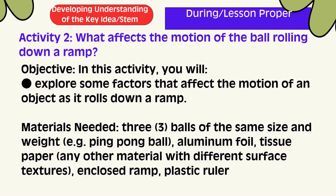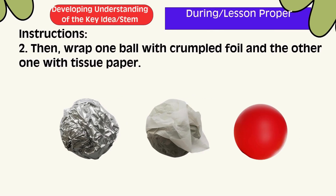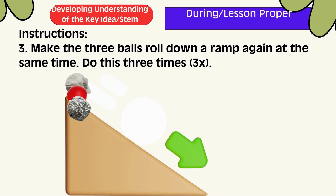Additional materials: a closed ramp and plastic roller. Instructions: Get 3 balls of the same size and weight. Make the 3 balls roll down the ramp at the same time. Observe what happens. Then wrap one ball with crumpled foil and the other with tissue paper. Make the 3 balls roll down the ramp again at the same time. Do this 3 times.